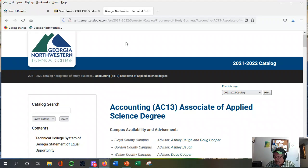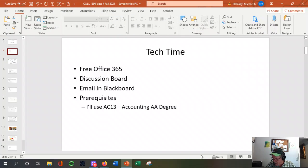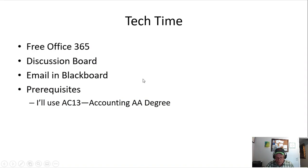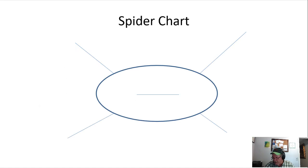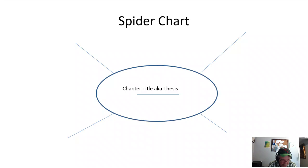Good, moving on. The last thing — the spider chart. This comes from outlining and it starts in the middle. The reason I put this out there: look, if you're taking three, four, five classes, you've got a job and two kids, your plate's overflowing. So there are ways to get the information you need for a chapter without taking six hours.